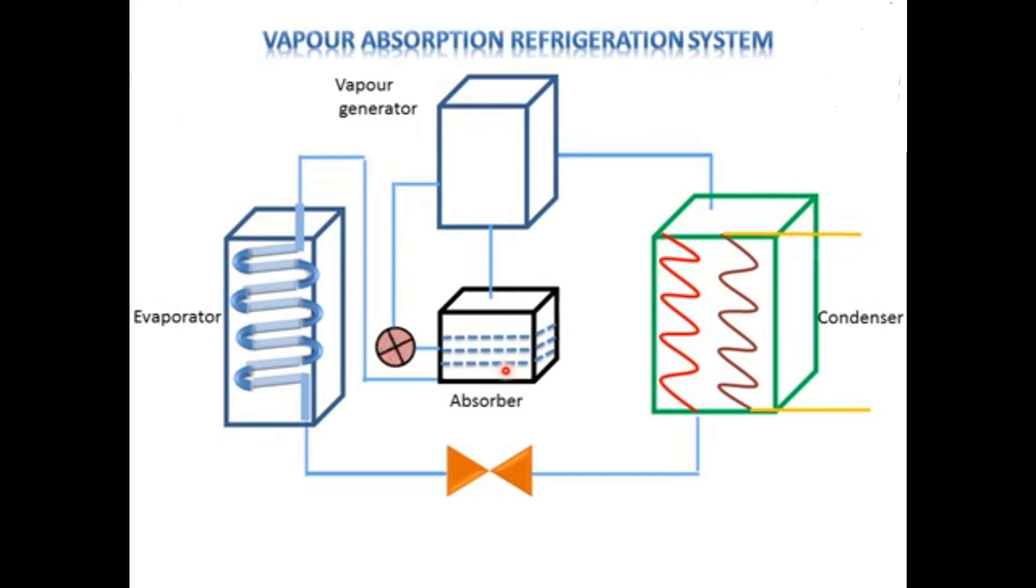In this way, this ammonia refrigerant is again converted to low pressure refrigerant which is then sent to the absorber again. So in this way, the whole process is completed. The evaporator is placed in such a place where we want to cool the space. So this is how Vapour Absorption System works.